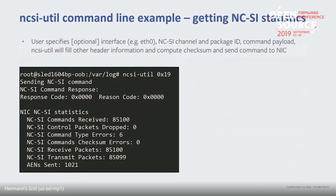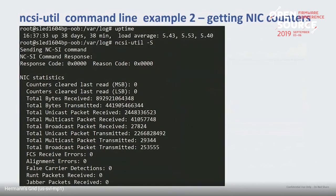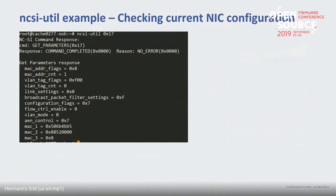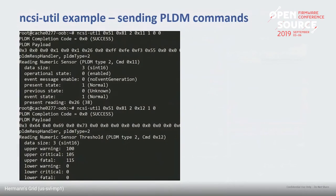Here are some examples of how we use NCSI UTIL internally: getting NIC statistics, getting NIC parameters (checking how the NIC is currently configured — current MAC address, which AENs are enabled, other NIC configuration). For PLDM debug, if the NIC supports PLDM over NCSI, you can manually construct a PLDM command payload, send it over NCSI, and get a response back. In this example I was trying to read a temperature sensor, and then sent another command to get the threshold for that sensor.